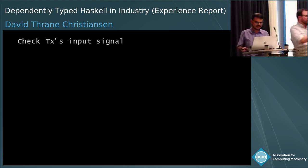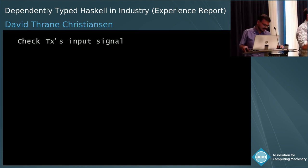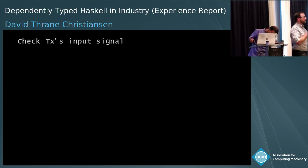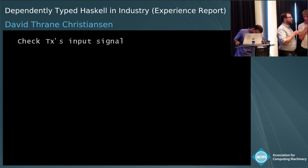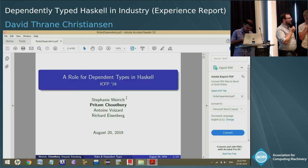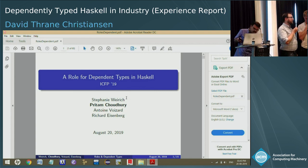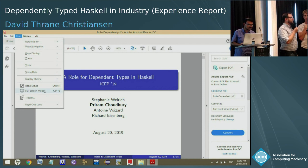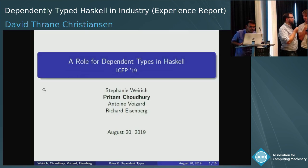Q: You mentioned writing proofs with GADT matching is very hard. Have you thought about writing a tactic language for Haskell? A: We haven't thought about writing a tactic language per se. There is a type checker plug-ins mechanism that can be used to implement these things, but typically that ends up with really subtle soundness issues that can come up and bite you. There's more discussion of that in the experience report.